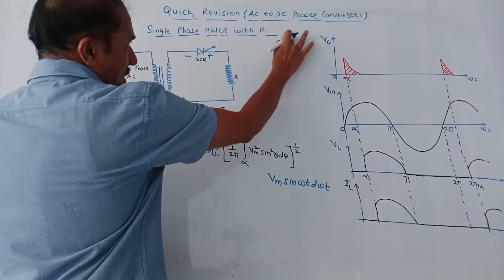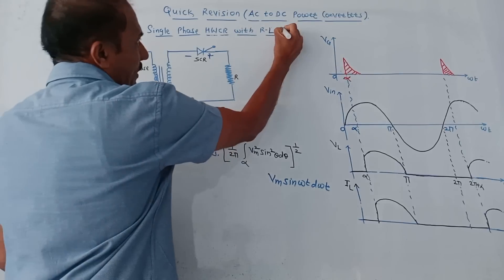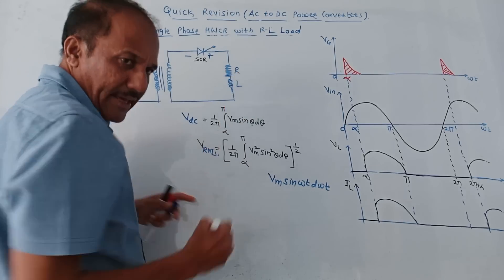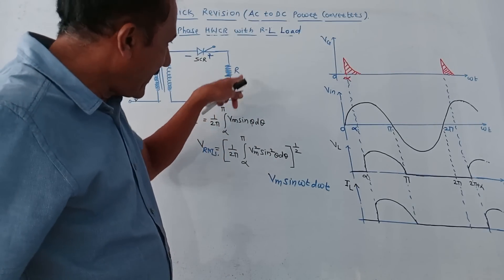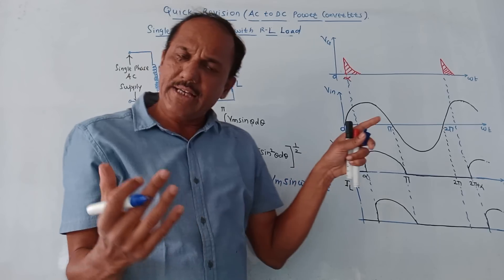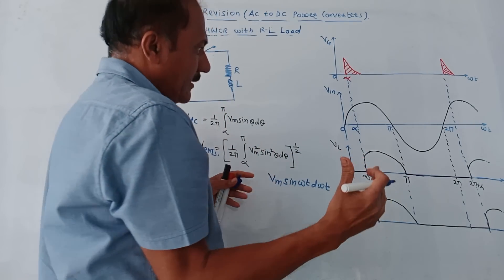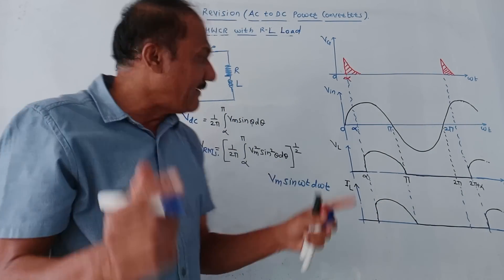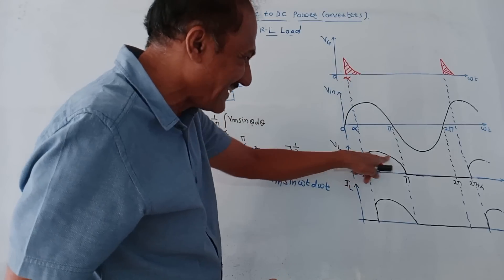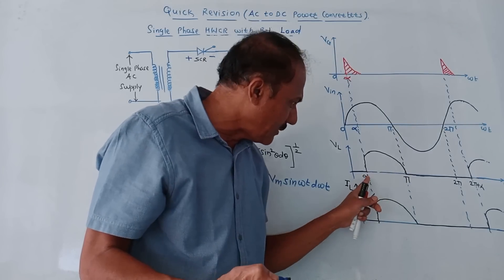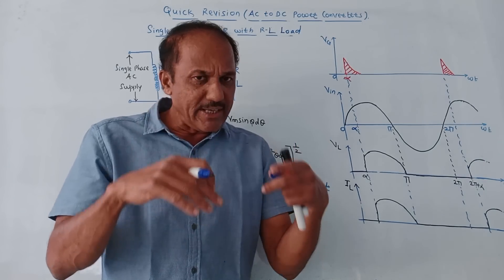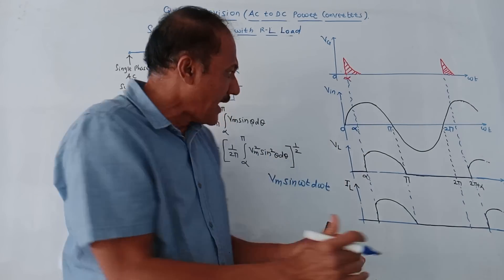For the single phase HWCR with RL load, instead of only R we add one inductor, making it an RL or inductive load. The explanation and basic working remain the same. During the positive half cycle the SCR is forward biased; we apply the gate pulse at angle alpha and conduction starts. As discussed earlier, conduction will be from alpha to pi. However, because we are using an inductor — which is a storage device — whenever the SCR is conducting, the inductor continuously stores energy.